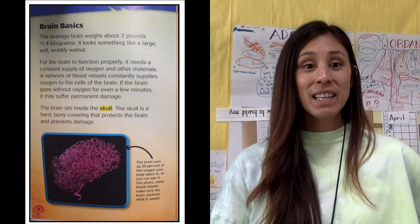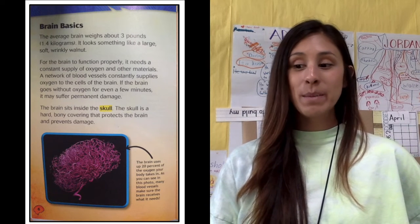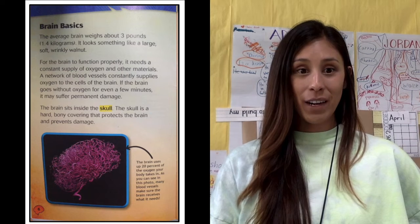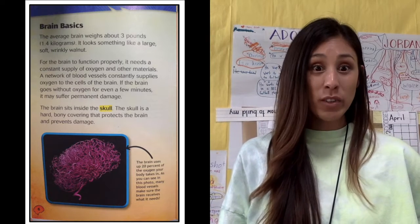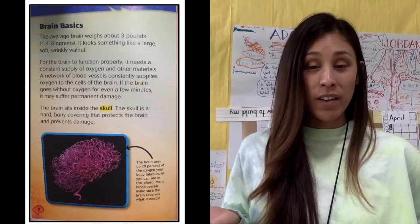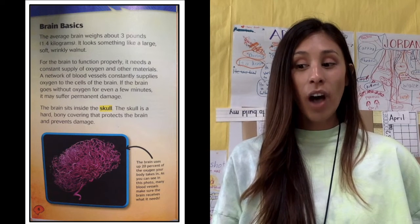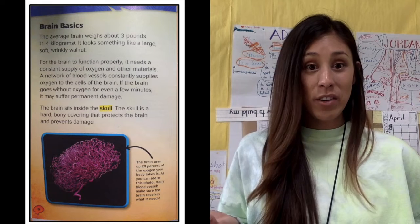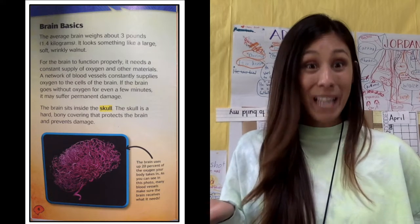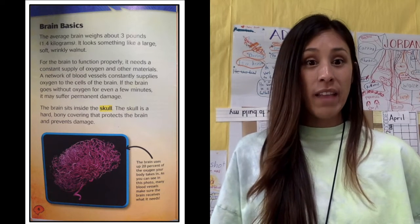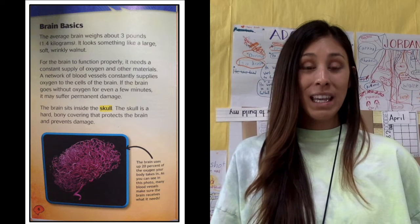When I zoom in on the sentences in this book, I'm seeing a lot of information. For example, it's information that the average brain weighs about 3 pounds or 1.4 kilograms — that's not somebody's opinion, it's a fact. Scientists have measured the weight of a brain and that's what they've discovered. It's also not somebody's opinion that the brain needs a constant supply of oxygen; scientific research has shown that without oxygen and other necessary materials, people die. This is all factual information, making this a purely and strictly informational book.